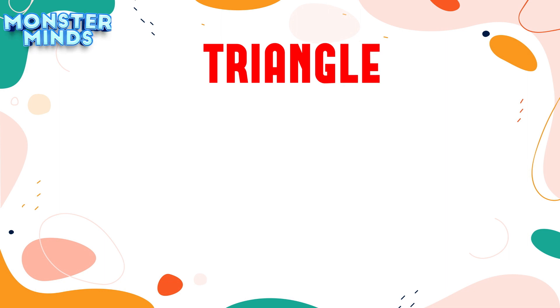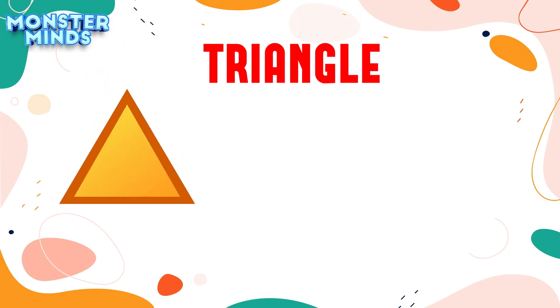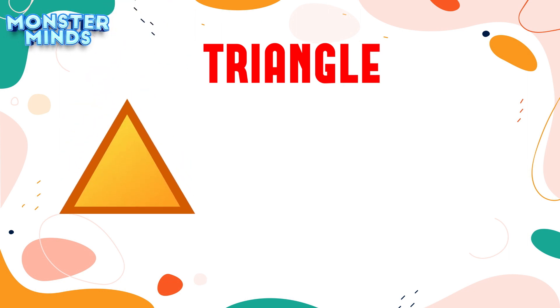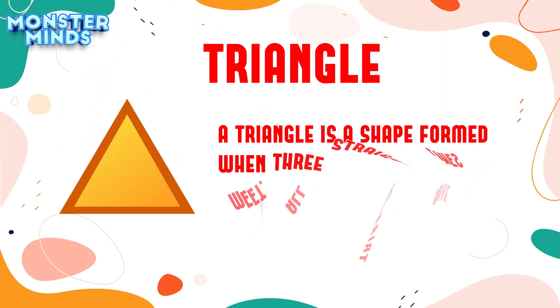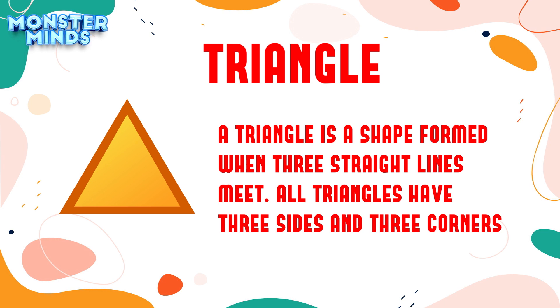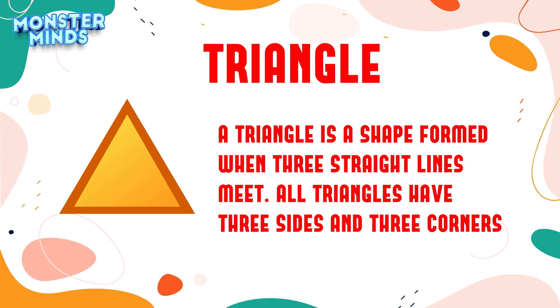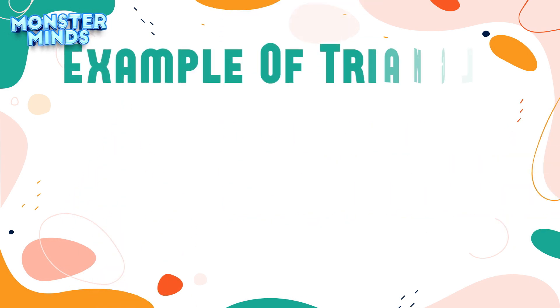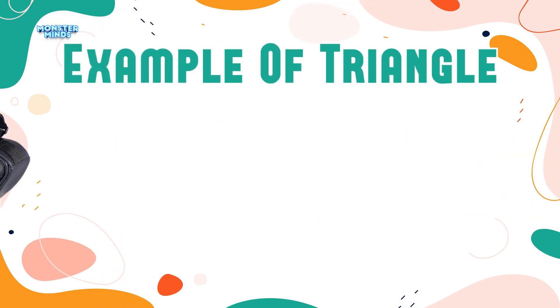Triangle: A triangle is a shape formed when three straight lines meet. All triangles have three sides and three corners. Example of Triangle.